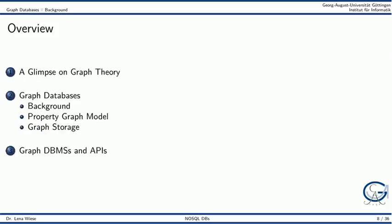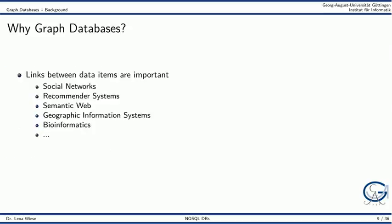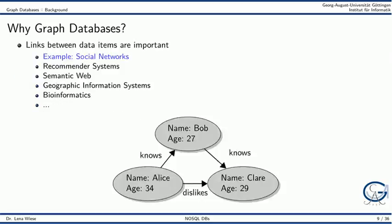We now come to the topic of using graphs for data storage. Graphs as a data structure are usually helpful when the links between data items are important and the links can also carry information on their own. One example for this are social networks. In a social network, nodes can represent persons that have certain properties like name or age, and nodes are connected by edges.